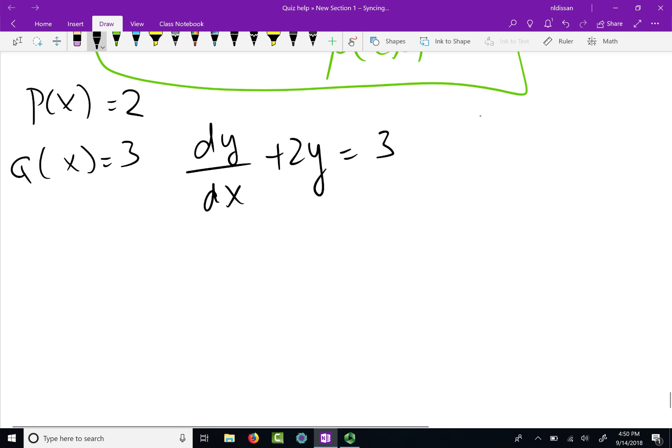Now, since we know p, let's find the integrating factor. That is e to the integral of 2 with respect to x, which is e to the integral of p with respect to x, right? So if you integrate 2, what should you get? You should get 2x. So it should be e to the 2x. Don't drop out the e. It's e to the 2x. Your integrating factor is e to the 2x.